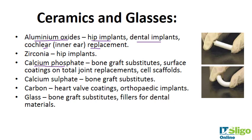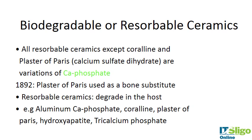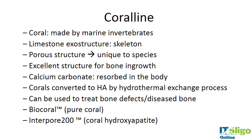There are a range of glasses used for bone graft substitutes and fillers for dental materials. There are also some biodegradable or resorbable ceramics — mostly variations of calcium phosphate, except for coralline and plaster of paris. Plaster of paris is calcium sulfate dihydrate, and coralline is derived from coral. Plaster of paris has been used as a bone substitute since the 1800s and is resorbable, degrading in the host. Other examples include aluminium calcium phosphate, coralline hydroxyapatite, and tricalcium phosphate.